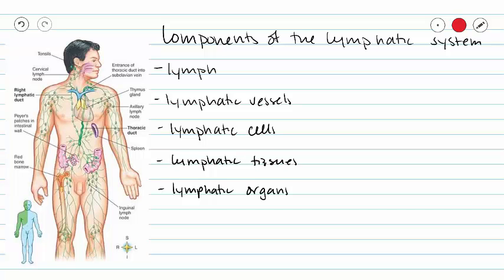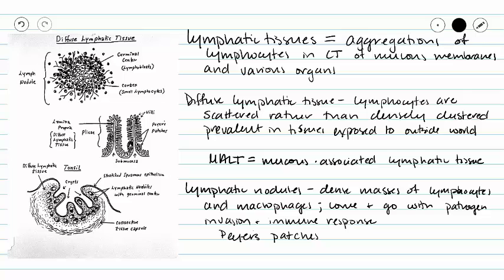This video will be a continuation in our series on the lymphatic system and will cover lymphatic tissues. When we talk about lymphatic tissues, we're talking about aggregations of lymphocytes in the connective tissues of our mucous membranes and other various organs.